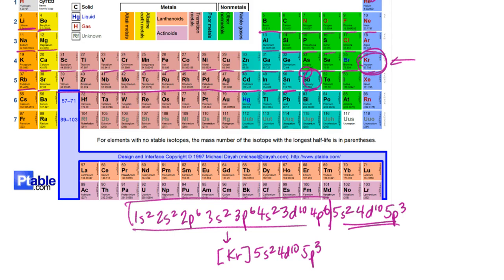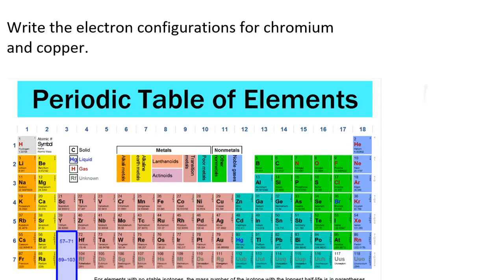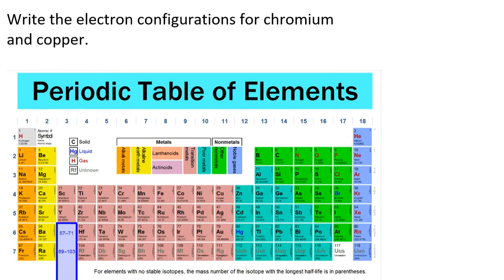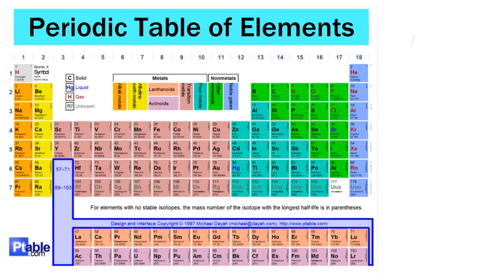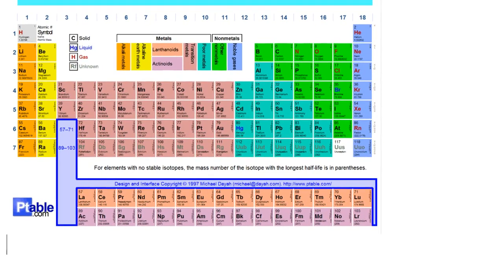Now one thing that I do have to mention is you have to be careful within the d block if you're assigned a d block element to actually write the configuration for. Because what happens is within the d block, you have a lot of exceptions to these filling rules. Now we'll discuss in class exactly why those exceptions exist. But I'll give you a couple of examples. Suppose I wanted to do the electron configuration for chromium and for copper.